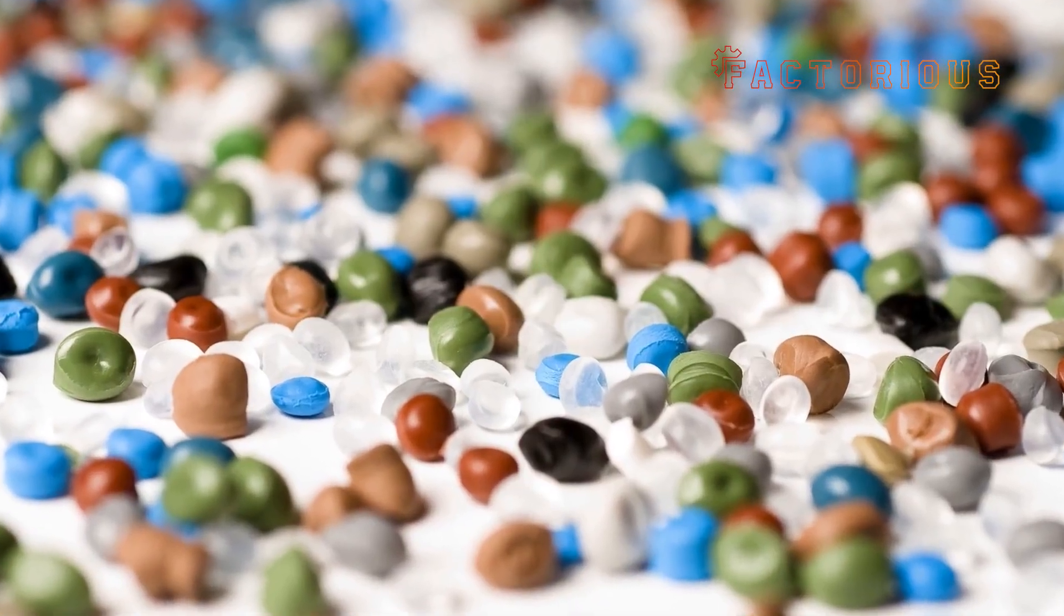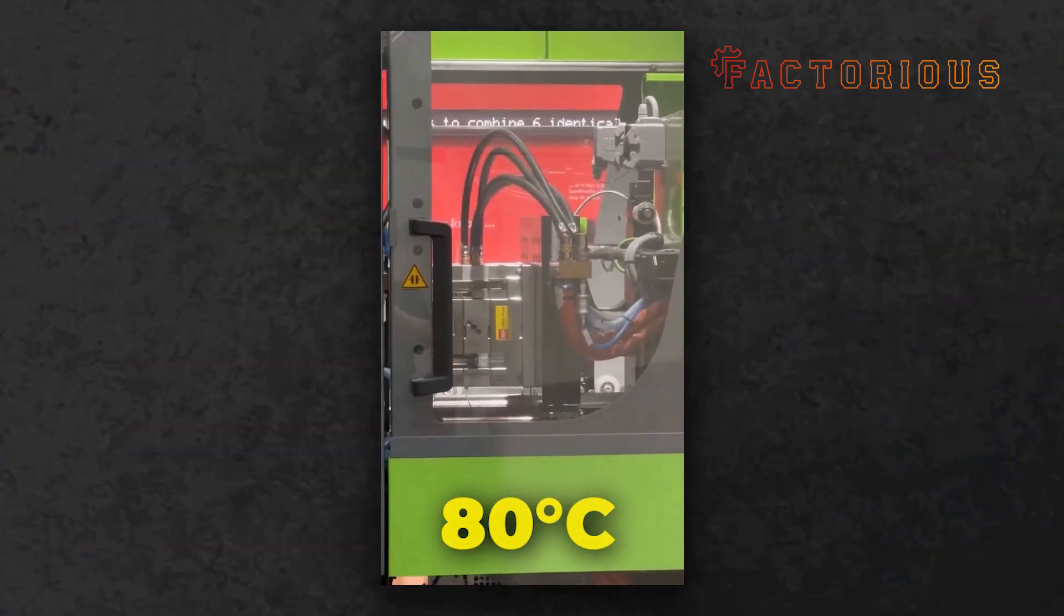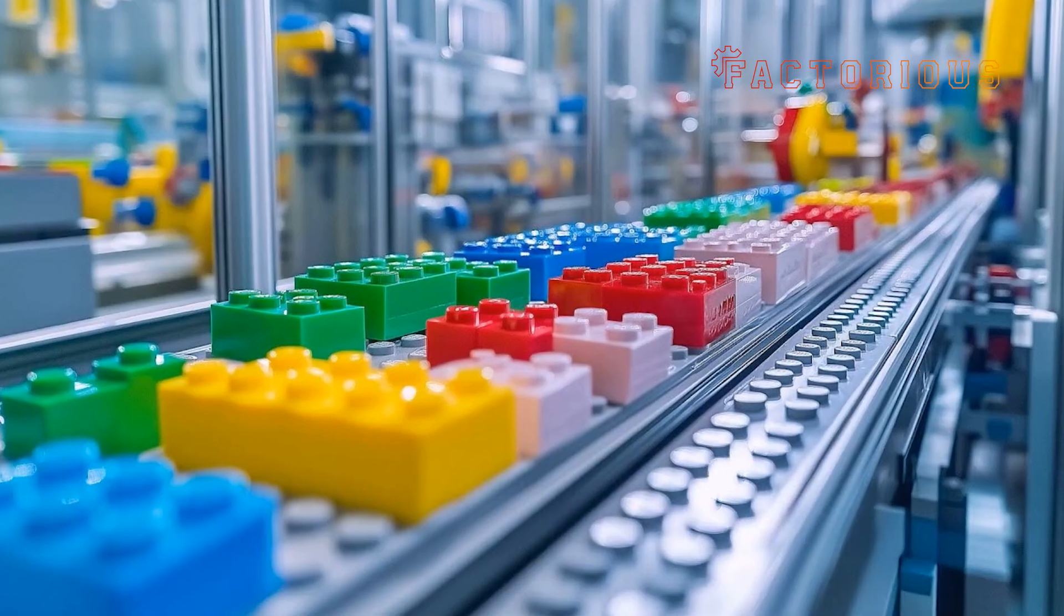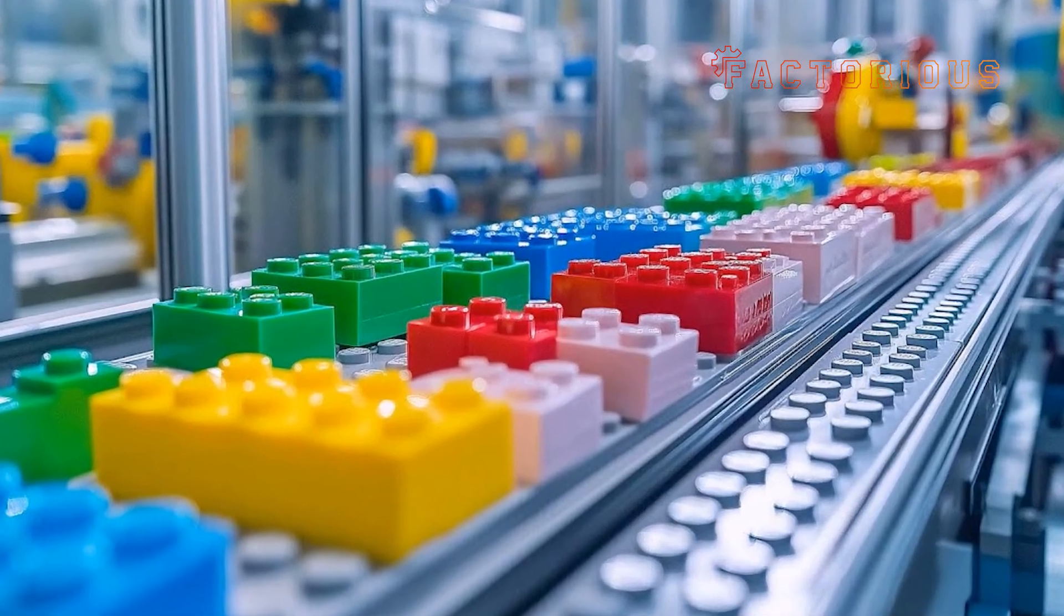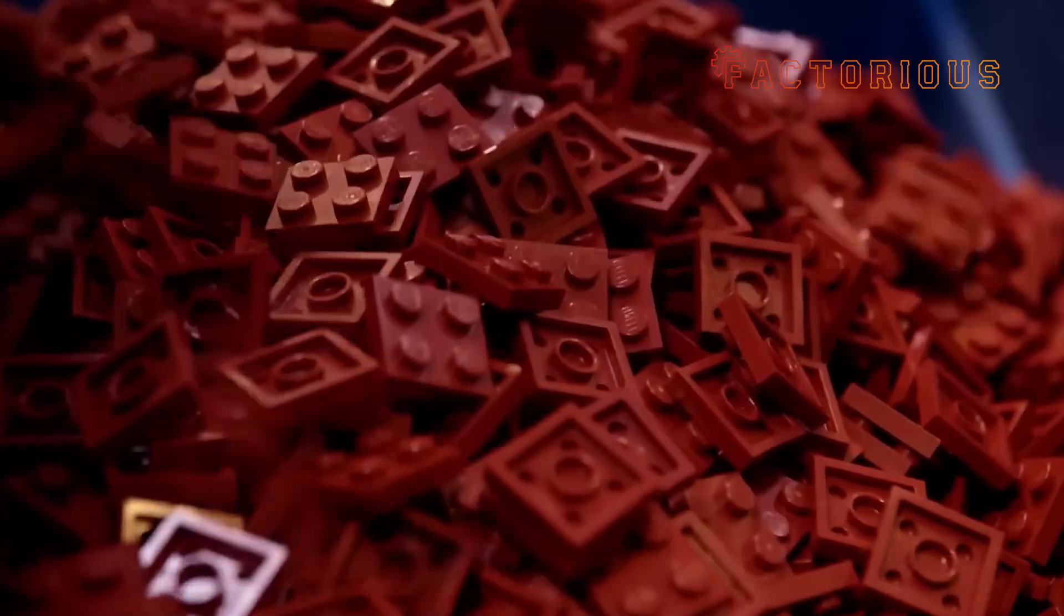And before these pellets ever touch a mold, they're dried in special hoppers at around 80 degrees Celsius to remove moisture. Why? Because even a tiny bit of water can create bubbles or imperfections during molding, and Lego's standards don't tolerate that.